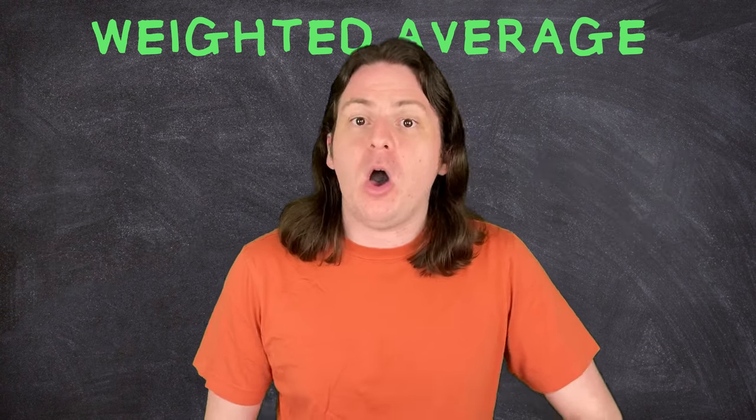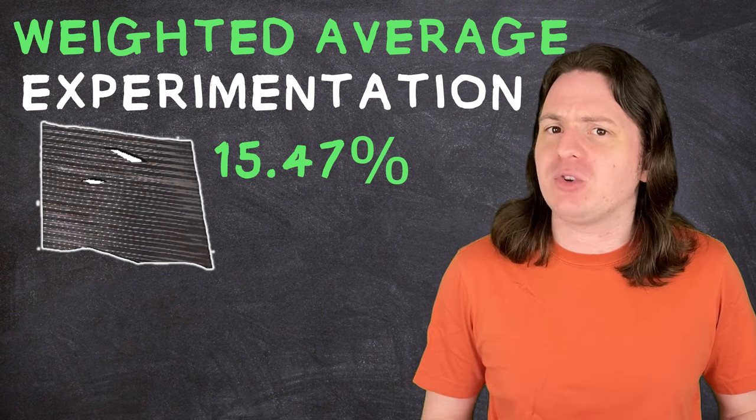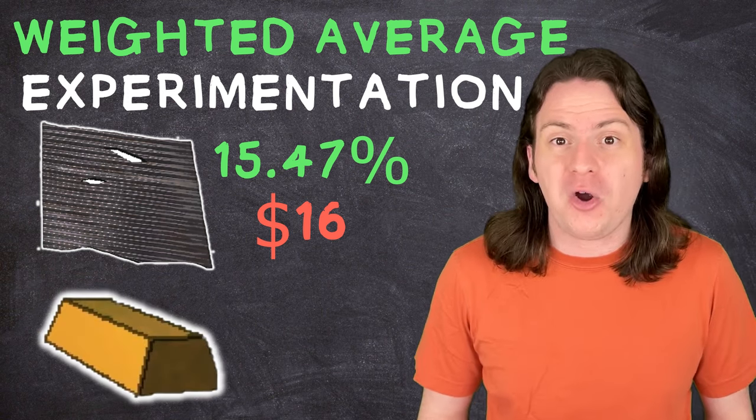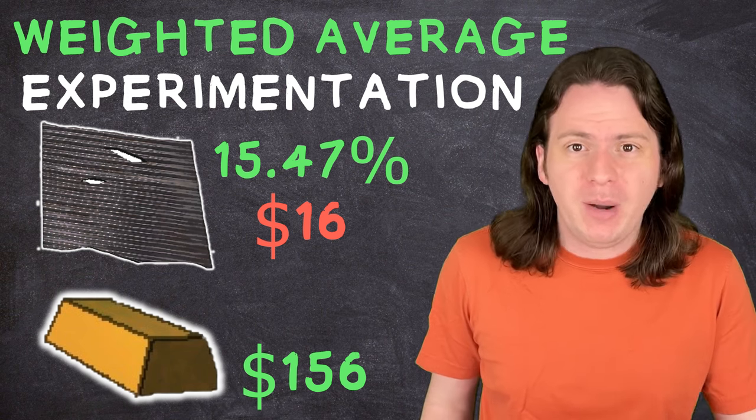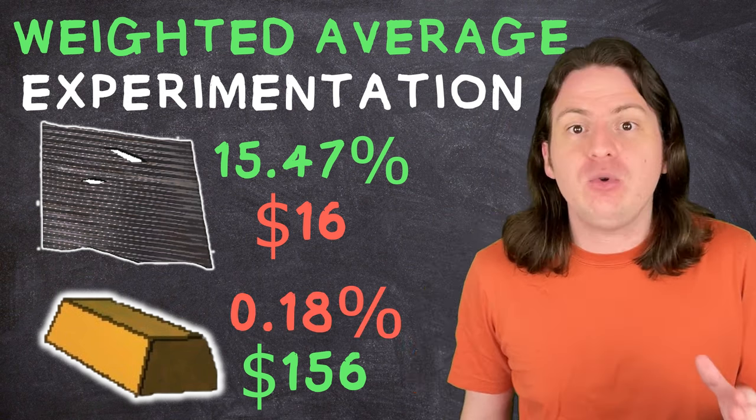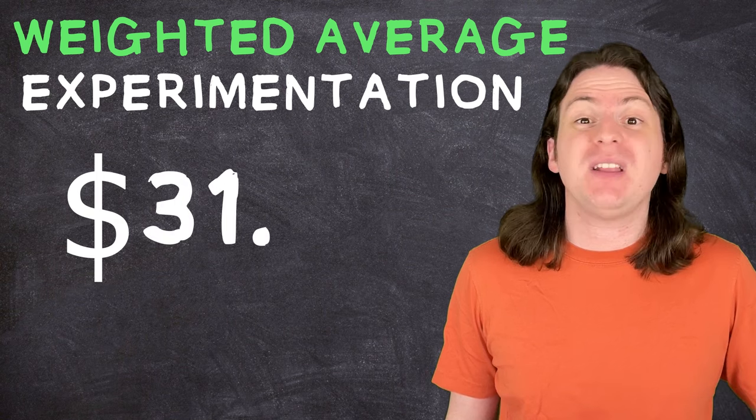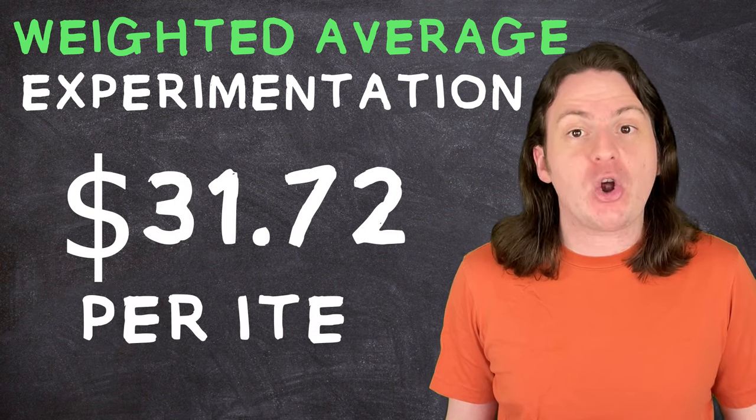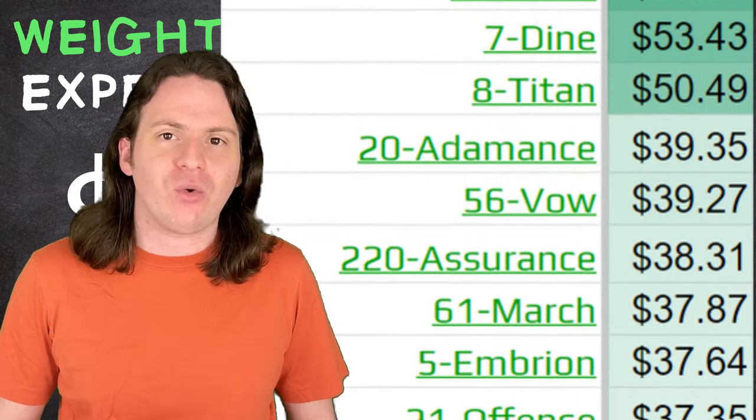So, as an example, on experimentation, the metal sheet is one of the most common items, only worth an average of 16 bucks. The gold bar is the most valuable item at 156 bucks, but it's also incredibly rare. So, if you go to experimentation a whole bunch of times, you can expect to make $31.72 per item you bring back. We can repeat this same process for every moon to find the average loot value. But we're not done yet, because profit isn't just about the quality of the loot you find, it's also about the quantity.